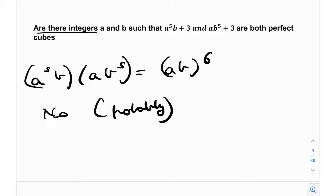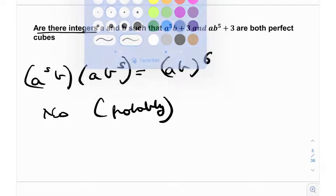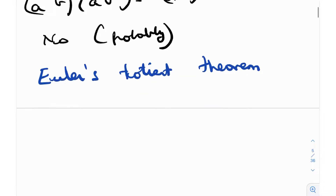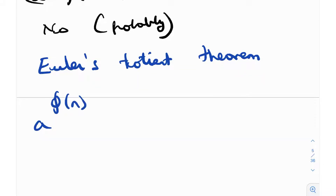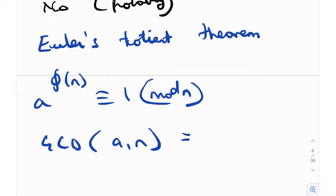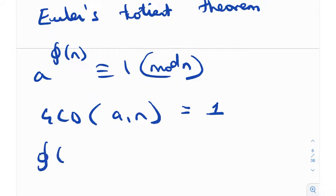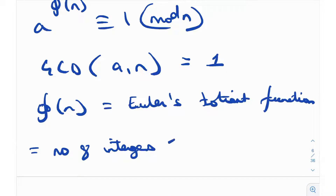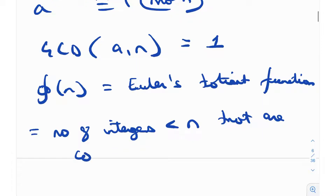Let's start with a little discussion on Euler's totient theorem. It's probably one of the first theorems you encounter when studying number theory, and it states that a^(φ(n)) ≡ 1 (mod n), which holds where gcd(a, n) = 1 as a prerequisite. The function φ(n) — Euler's totient function — is essentially the number of integers less than n that are coprime to n.